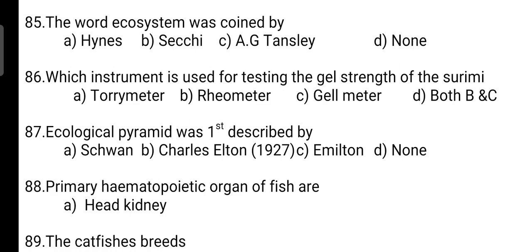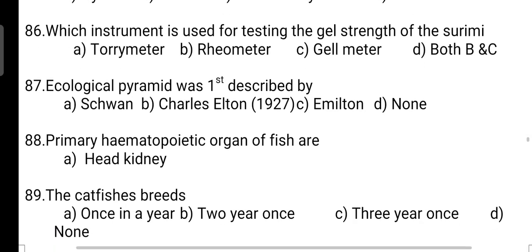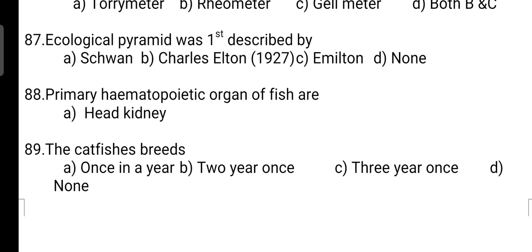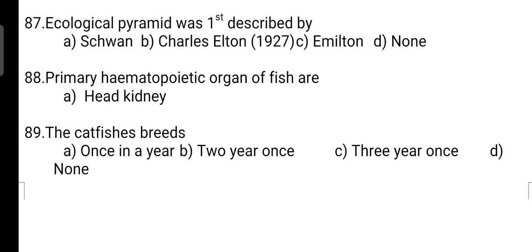The word 'ecosystem' was coined by: correct answer is Option C — it was coined by A.G. Tansley. Which instrument is used for testing the gel strength of surimi? Correct answer is Option B — it is rheometer. Ecological pyramid was first described by: correct answer is Option B — it was first described by Charles Elton in 1927.